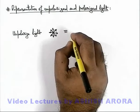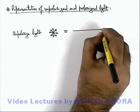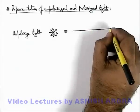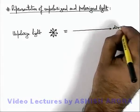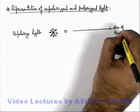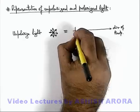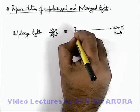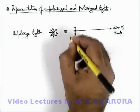This unpolarized light is on paper represented as this diagram, where if this is the direction of propagation of light, then perpendicular to this direction we draw an arrow as well as we draw a dot in between.